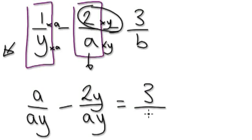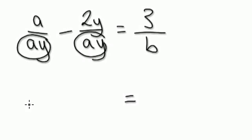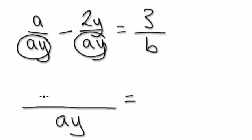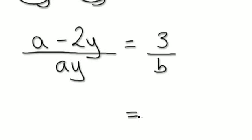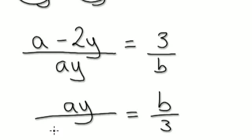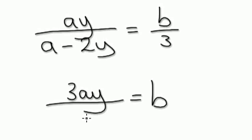So this fraction becomes A over AY, and this fraction becomes 2Y over AY. With the minus in there, equals 3 over B. Now the two denominators are the same — we can merge. So merged: A minus 2Y over AY equals 3 over B. Now you've got one fraction, so take the reciprocal of both sides: B over 3 equals AY over A minus 2Y. Now times both sides by 3 — the 3 goes to the top — so B equals 3AY over A minus 2Y. That's your final answer.